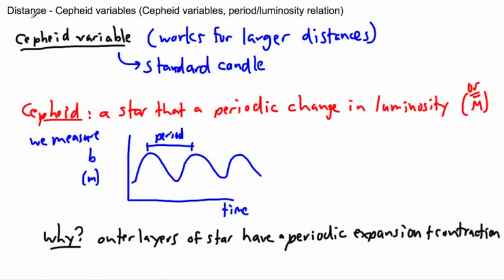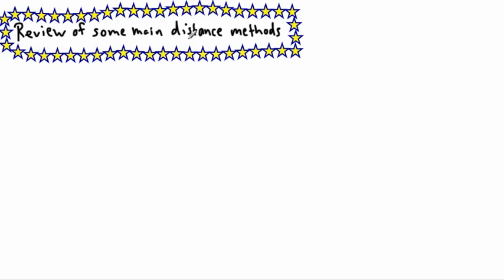We've just been looking at a distance method called Cepheid variables to find the distance to a star or even a galaxy. What I want to do just to finish off is to review the main distance methods that we've actually looked at so far.